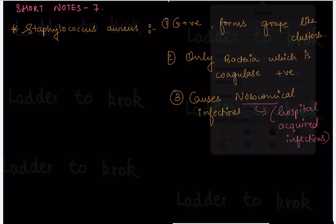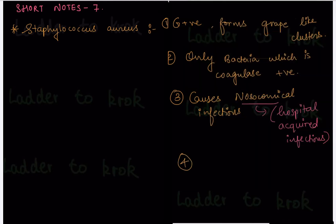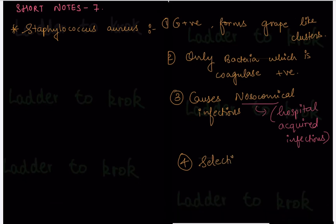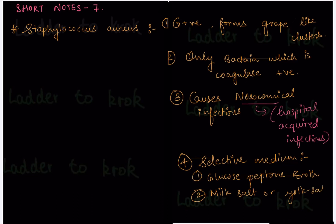Then we should know something about its cultural mediums, right? So this bacteria can be cultured on the selective medium. It can be cultured on selective medium, for example, on glucose peptone broth. Or it can also be cultured on the selective medium like milk salt or York salt agar.